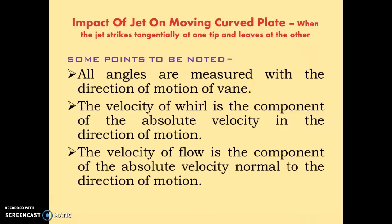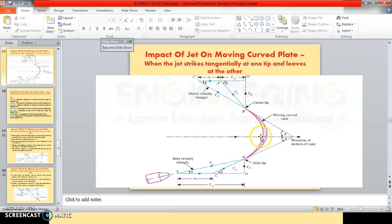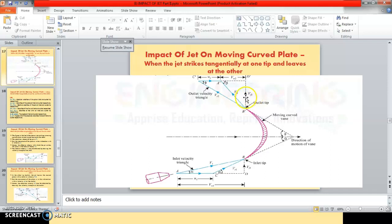The velocity of flow is the component of the absolute velocity normal to the direction of motion. The x-direction is the direction of motion, so normal to it is the y-direction. At the inlet, Vf1 is the velocity of flow, which is the component of absolute velocity V1 perpendicular to the direction of motion. Similarly, at outlet, Vf2 is the component of absolute velocity V2 perpendicular to the x-direction.